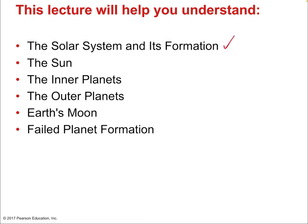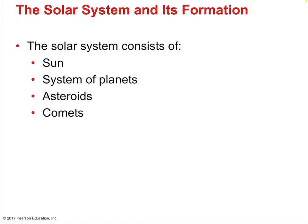Our table of contents covers: the solar system and its formation, including how the planets formed; the sun and how it gets its energy; the inner planets including Earth; the outer planets like Jupiter; Earth's moon; and the idea of failed planet formation — why we have a certain number of planets and not more. The solar system consists of the sun, a system of planets, asteroids, and comets. Dwarf planets don't have their own category — they are either asteroid-like or comet-like.